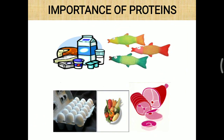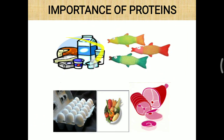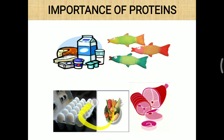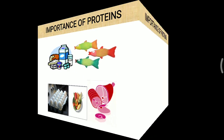The main sources of protein are milk and milk products, fish and non-vegetarian diet, as well as eggs and vegetables. Particularly, pulses are a good source of protein for vegetarians.